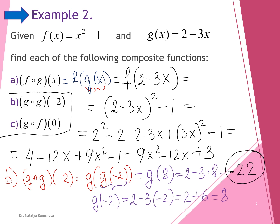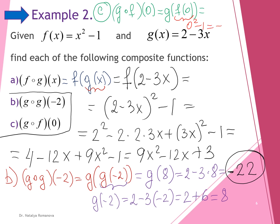Example c: we find the composition of g and f at x equals 0, written as g of f of 0. The inner function f of 0 equals 0 squared minus 1, which equals negative 1. Now we find g at x equals negative 1: 2 minus 3 times negative 1 equals 2 plus 3 equals 5. So the value of g of f at x equals 0 is 5.